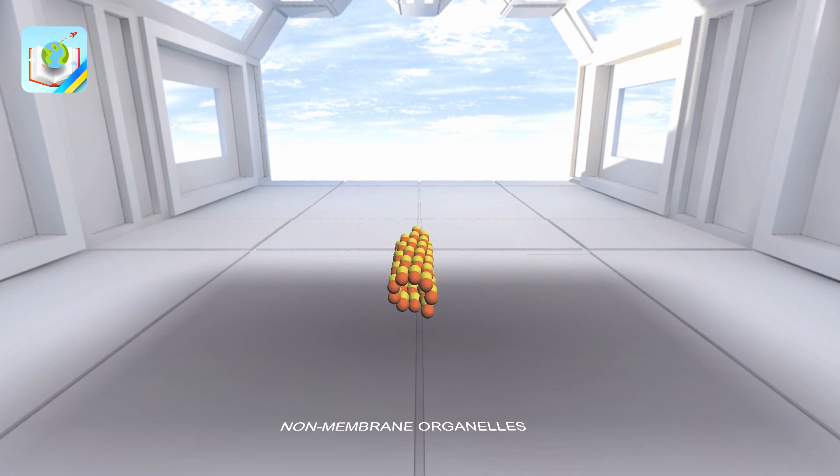Microtubules are straight, long, hollow cylinders that do not branch. Their outer diameter is about 24 nanometers, the inner space is 15 nanometers wide, and the wall thickness is about 5 nanometers.